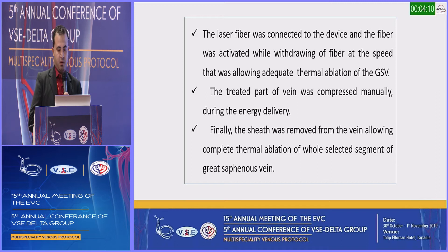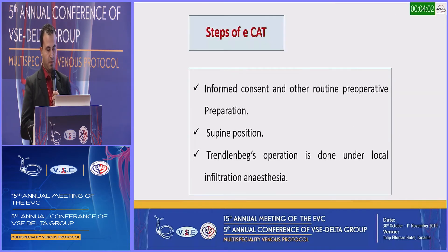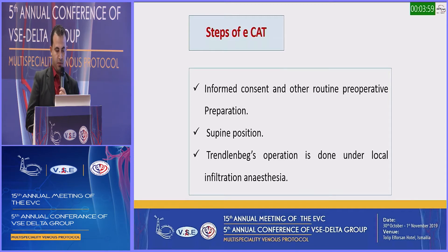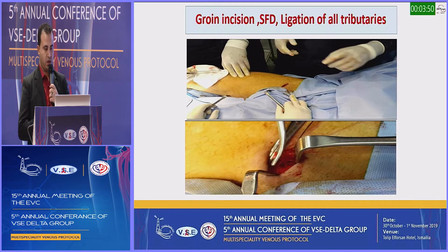Treated parts of veins are compressed manually during energy delivery. Finally, the sheath was removed from the vein, allowing complete thermal ablation of all selected segments of the great saphenous vein. For the CAT procedure, after informed consent and routine preoperative preparation, with the patient in supine position, Trendelenburg — the operation is done under local anesthesia. This picture shows the groin incision, saphenofemoral disconnection, and ligation of tributaries.